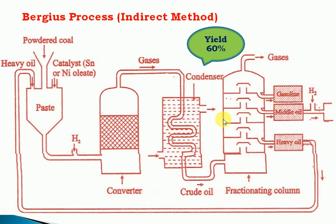The yield of this method is about 60%. For example, from 10 kg of coal, about 6 kg of oil is obtained. Heavy oil is recycled back into the process. Powdered coal and heavy oil are mixed to continue the conversion — this is the flow chart of the process.